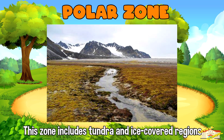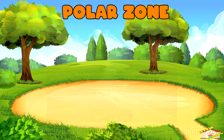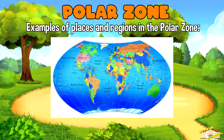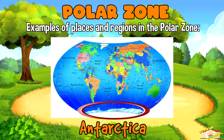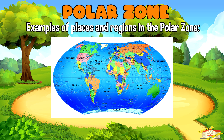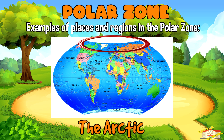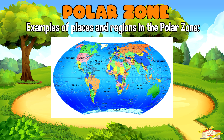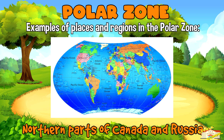The polar zone includes tundra and ice-covered regions where vegetation is sparse due to extreme cold. Examples of places in the polar zone are Antarctica, the Arctic, and northern parts of Canada and Russia.